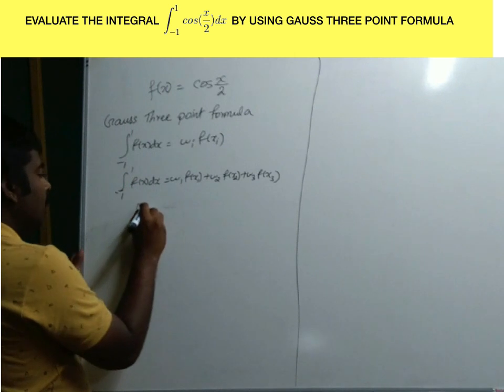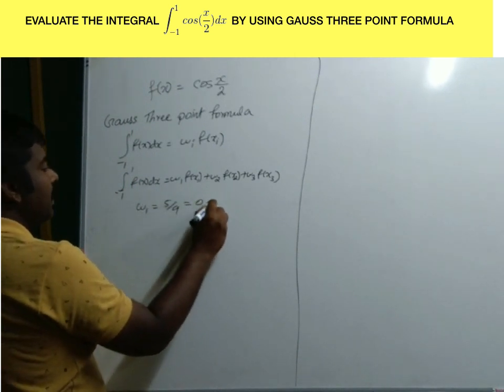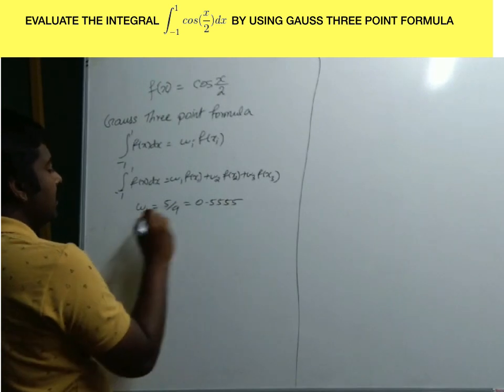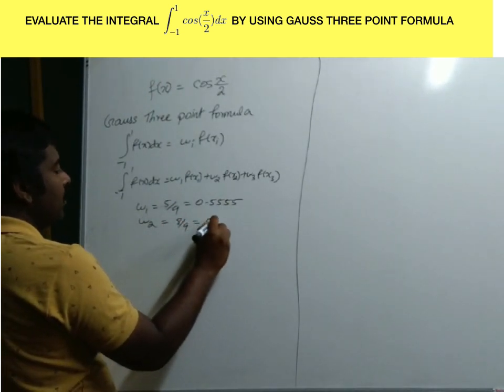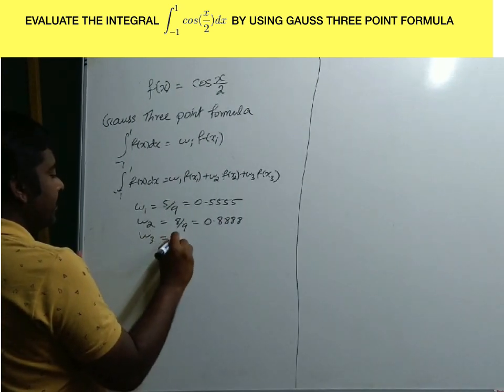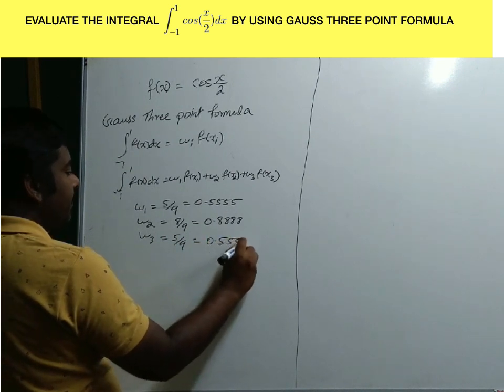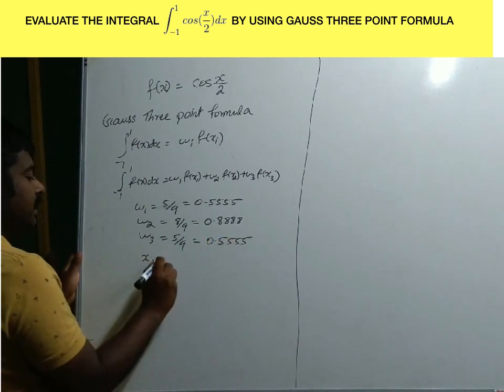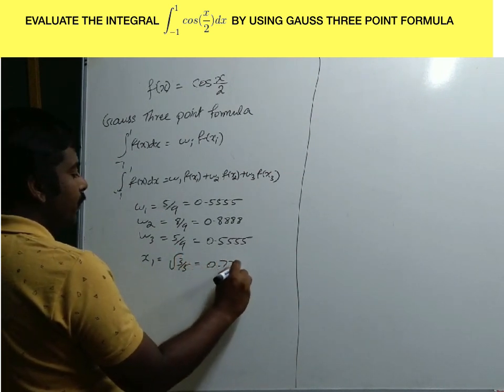Here, w1 equals 5/9, which equals 0.5555. w2 equals 8/9, which equals 0.8888. w3 equals 5/9, which equals 0.5555. x1 equals the square root of 3/5, which equals 0.7745.